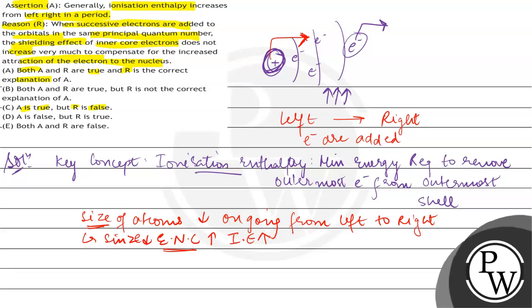So as the size decreases, effective nuclear charge on the outermost electron will also increase, and ionization enthalpy will also increase.